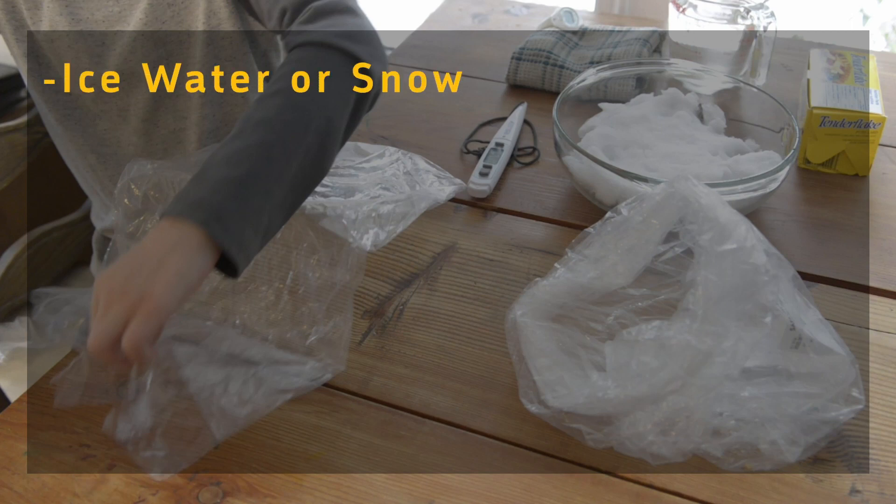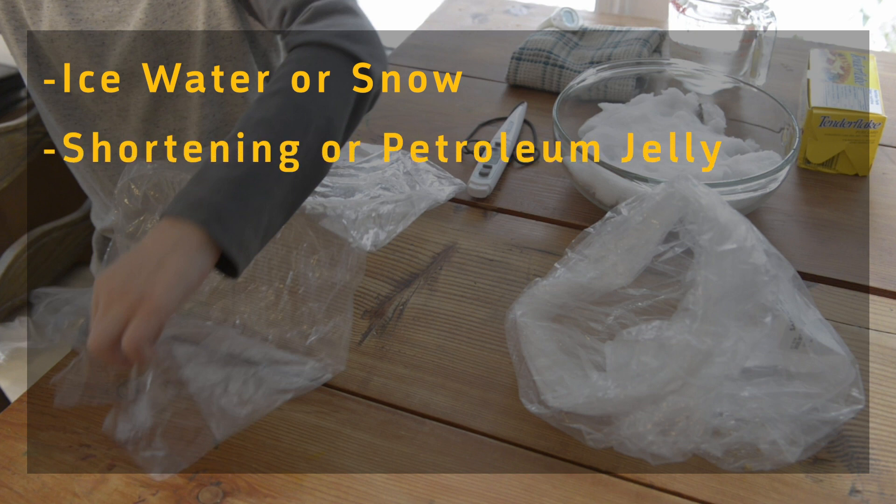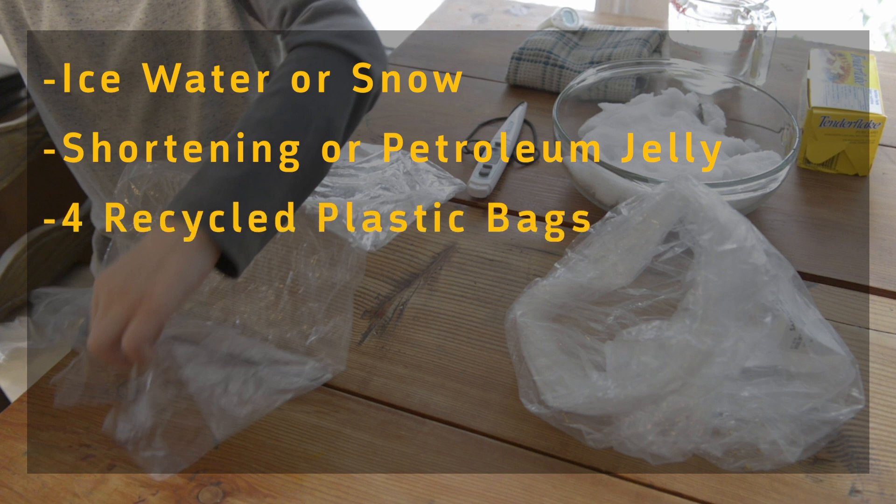For this experiment we will need a container of ice water or snow, blubber - we are using shortening like Crisco or petroleum jelly like Vaseline - four recycled bags, a timer, thermometer and a hand towel.